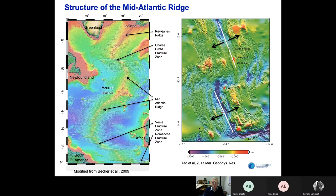Active vents are shown on here as red triangles, and you'll see that they're quite close to the ridge axis itself, usually within a few kilometers or maybe up to 12 or so kilometers away from the ridge axis. The axis is also broken up by these offsets which you can see here, particularly at the bottom, the larger ones being called fracture zones, and we will come back to those later in the talks.